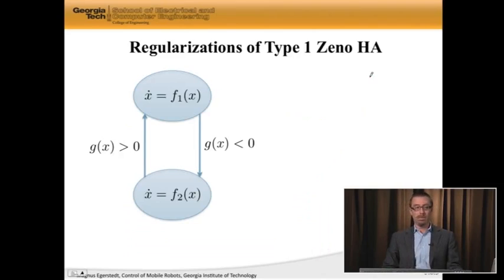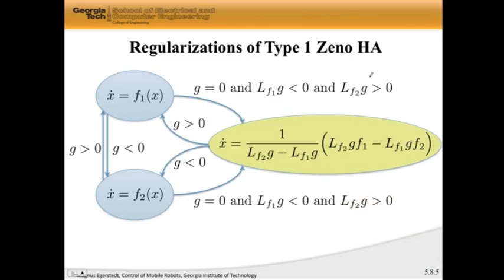So let's figure it out. If I have, this is my hybrid system, and if this is a type 1 Zeno hybrid automaton, how do I regularize it? What do I do to add this extra sliding mode? Well, this is what I do. And now, let's parse this. Even though it looks a little bit like a mouthful, let's figure out what it means.